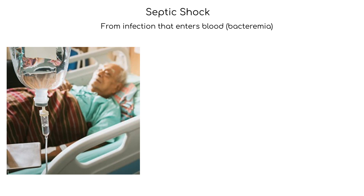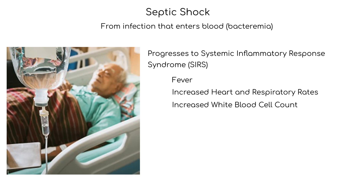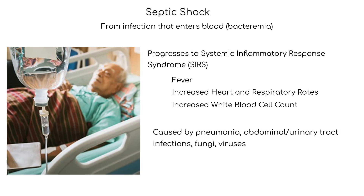Septic shock results from an infection that enters the blood — bacteremia — and progresses to systemic inflammatory response syndrome, which is characterized by fever, increased heart and respiratory rates, and a high white blood cell count. Septic shock can be caused by pneumonia, abdominal and urinary tract infections, fungi, and viruses. The infection triggers the release of over 100 inflammatory mediators that promote inflammation.